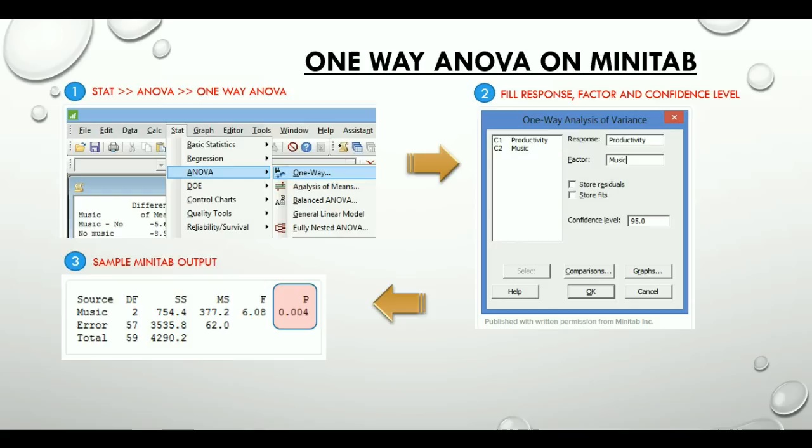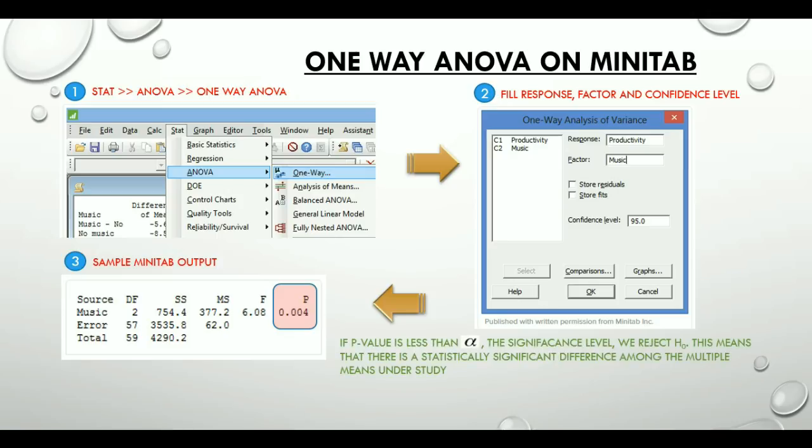So looking at the table and the p-value, our rejection criteria here would be, if p-value is less than alpha, that is the significance level, we reject H0. This means that there is a statistically significant difference among the multiple means under study.